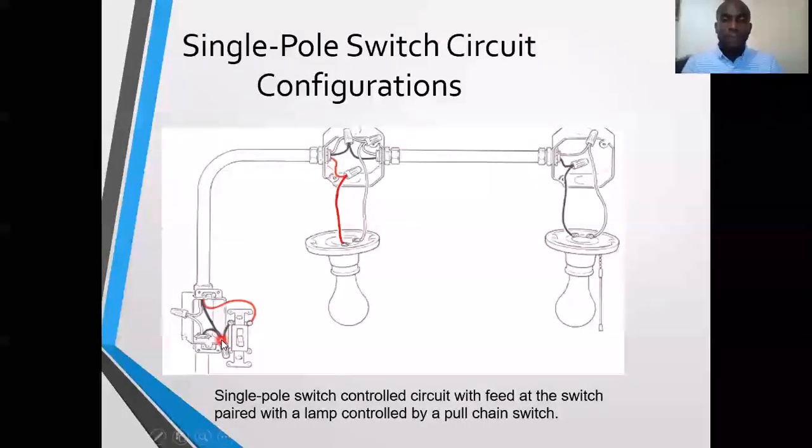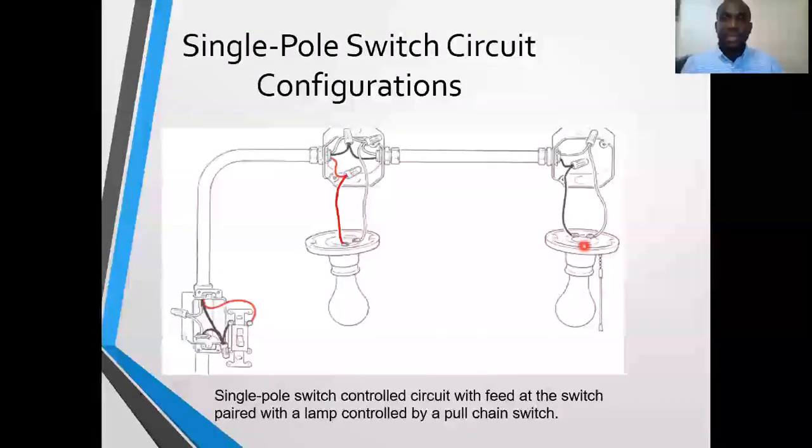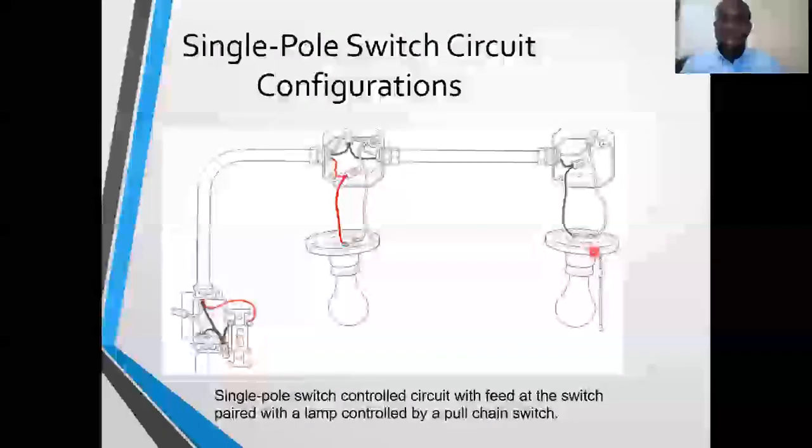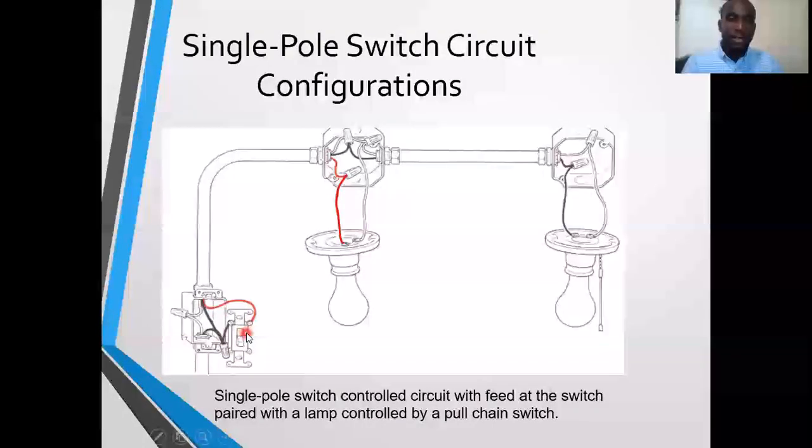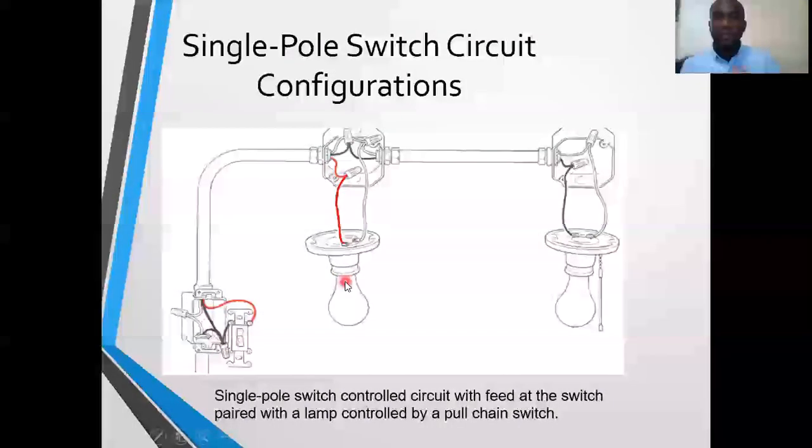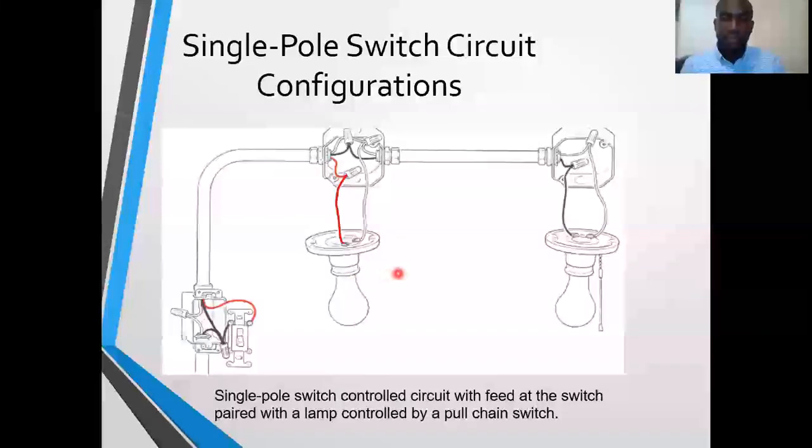It's important for you to share the main source hot between the single pole switch and the keyless that is controlled by the pull chain, so that this switch will independently control this light while this single switch will independently control this light. So we have two different controls independent of each other.